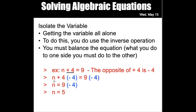I want to isolate the variable — I want to get n by itself. If I have plus four and I take away four, I'm left with nothing, which would isolate the variable and leave n all by itself. But if I take four away from this side of the equation, my equation is no longer balanced. So I must do the inverse operation on the other side of the equation so that it remains balanced. Once I've done that, n is now by itself, and on the other side I still have nine minus four, which is five. Some of you would have known right away that n is five, but what we are focusing on in grade 5 are these steps.